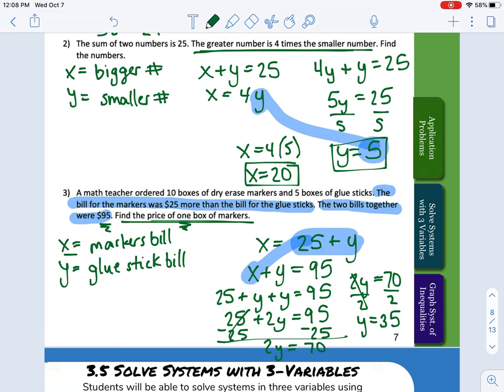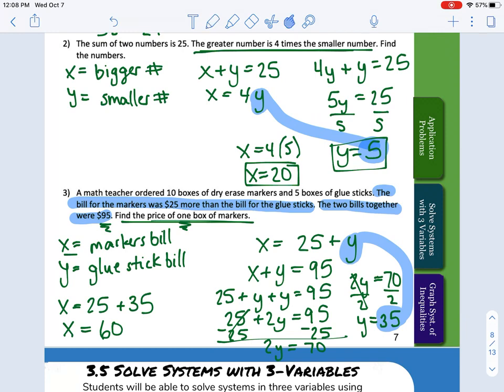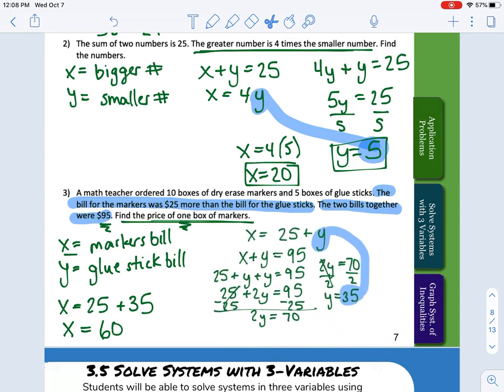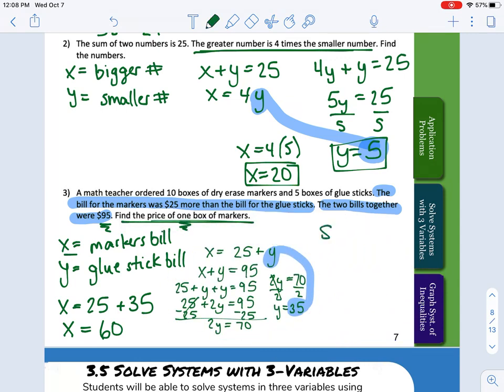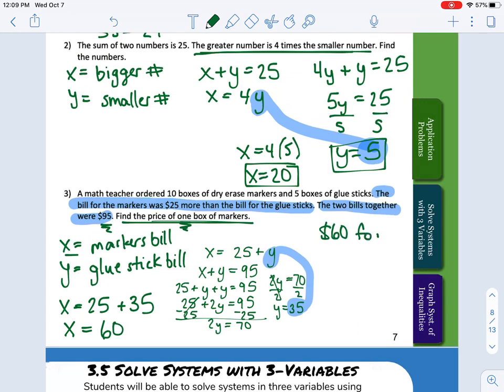We don't want to know how much they spent per bill though. We need to find out how much the price of one box of markers is, so we still do need to solve for how much a box of markers cost. I'm going to plug y in up here. So x is equal to 25 + 35, or x is equal to $60. Now to solve for the price of one box of markers, we know that we paid $60 for 10 boxes, so it would be $6 for one box. So they paid $6 per box of markers.